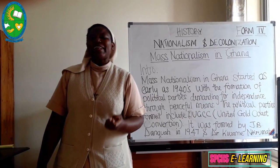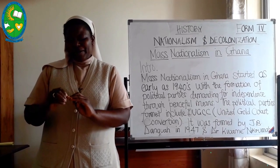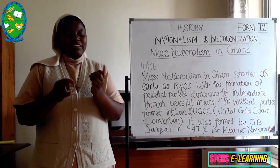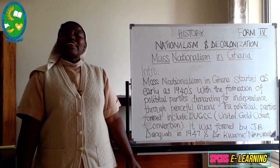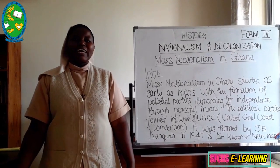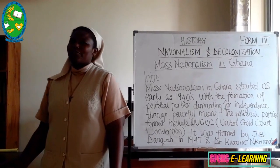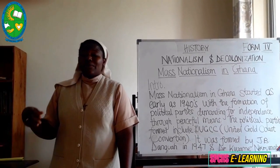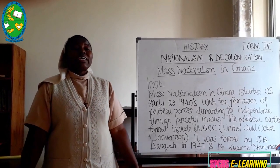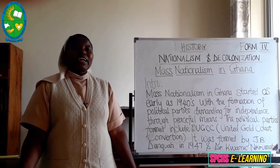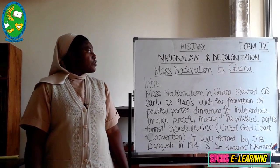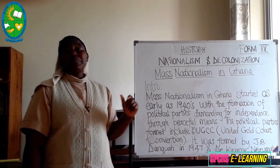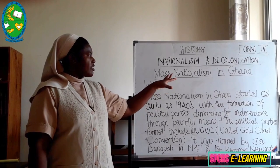In our previous lesson, we looked at forms of decolonization — three forms in total. We looked at decolonization through peaceful means, starting with Tanganyika as one of the countries decolonized through peaceful means or constitutional means. We also looked at the reasons why Tanganyika got independence earlier than Kenya and Uganda. Today we are going to focus on the second African country that received independence through peaceful means, which is Ghana.